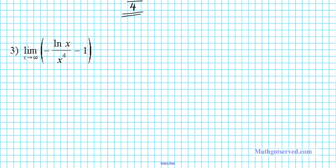Let's take a look at question number 3. We're going to find the limit as x approaches infinity of negative natural logarithm of x divided by x to the 4th minus 1. We have the quotient of two functions — a polynomial function and a logarithmic function — so we have to consider the growth rates. The natural logarithmic function is the slowest growing function. Logarithmic is slower than polynomial, and polynomial is slower than exponential.